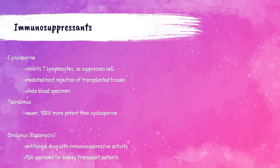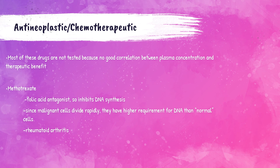Immunosuppressant drugs are used to inhibit or prevent the activity of the body's immune system. Cyclosporin suppresses cell-mediated host rejection of transplanted tissues or organs, and a whole blood sample is necessary for the testing of this drug. Tacrolimus is a newer immunosuppressant that works similarly to cyclosporin but is significantly more potent. Sirolimus is an antifungal drug that has immunosuppressive activity and is used for immunosuppression in patients who have received a kidney transplant. Most chemotherapeutic drugs do not have TDMs ordered, mainly because there is not a proven relationship between the concentration of the drug in the blood and its therapeutic benefit.